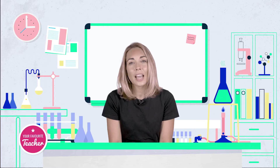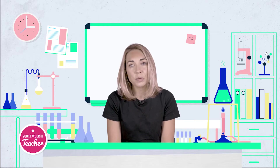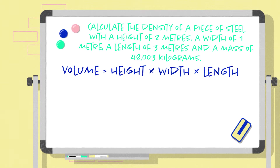You need to calculate the volume of the steel by doing height times width times length. So, 2 times 1 times 3, which equals 6.